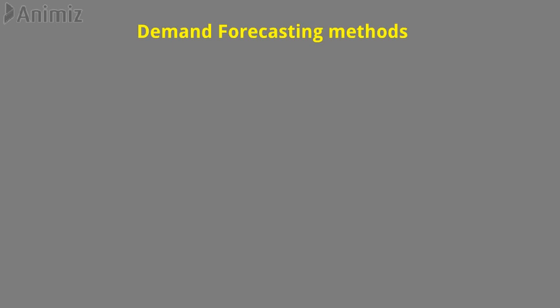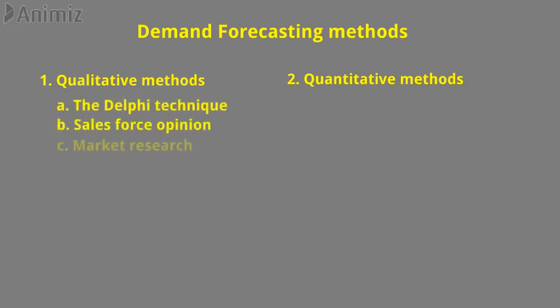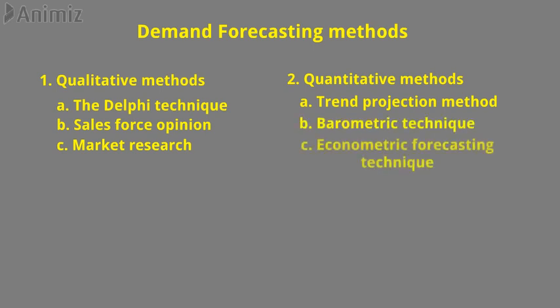Now, demand forecasting methods. There are two basic types of demand forecasting methods: qualitative methods and quantitative methods. Examples of qualitative methods are the Delphi technique, sales force opinion, and market research. Examples of quantitative methods are the trend projection method, barometric technique, and econometric forecasting technique. Let's discuss each technique separately.